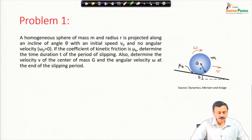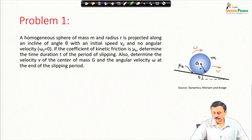Also determine the velocity v of the center of mass G and the angular velocity omega at the end of the slipping period, that means when it starts rolling.